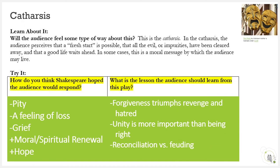Remember when I asked you about the feelings you experience at the end of a sad movie, other than being sad? Those emotions caused by the tragedy are called catharsis. Shakespeare wants the audience to pity Romeo and Juliet and experience a sense of loss or grief. However, when the families unite, there is a sense of moral and spiritual renewal and hope for the future. We learn that forgiveness triumphs over revenge and hatred. We are also reminded that unity is more important than being right. Finally, reconciliation should always be offered rather than meaningless feuding.